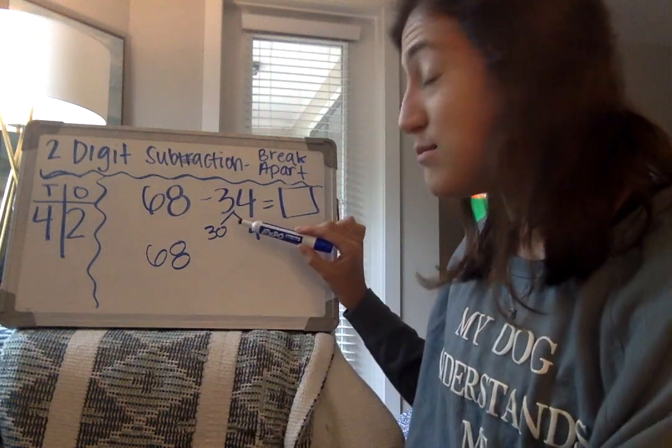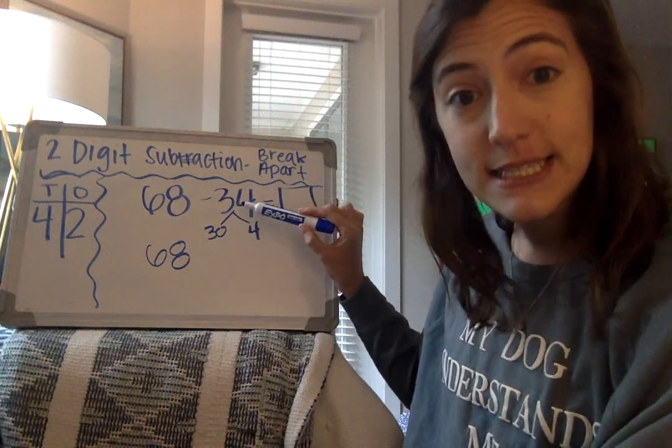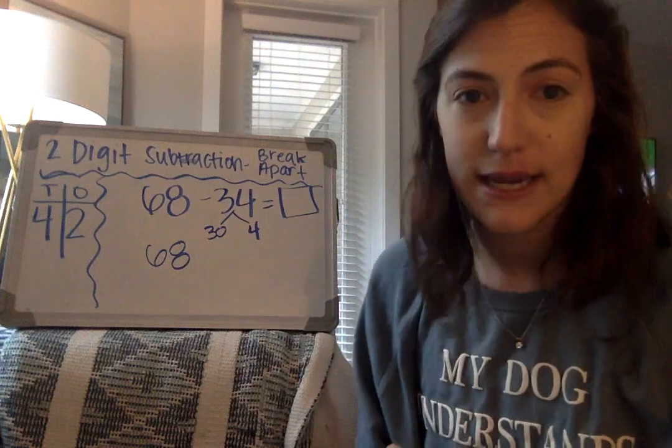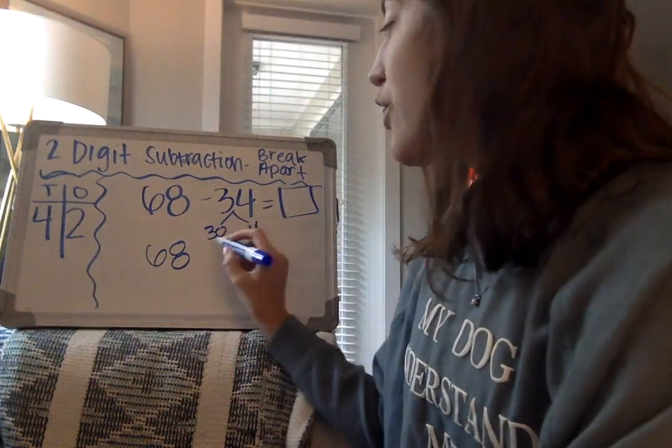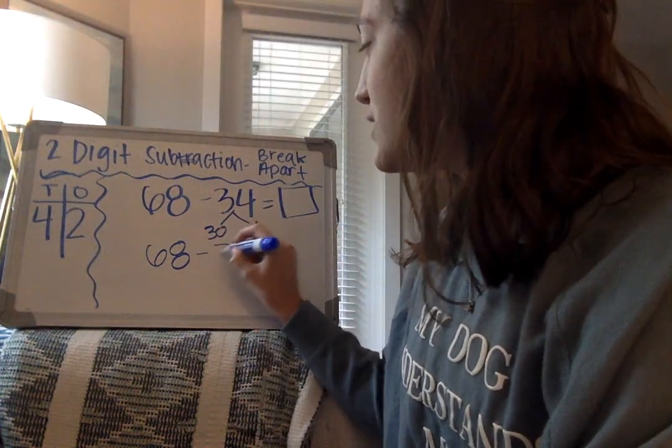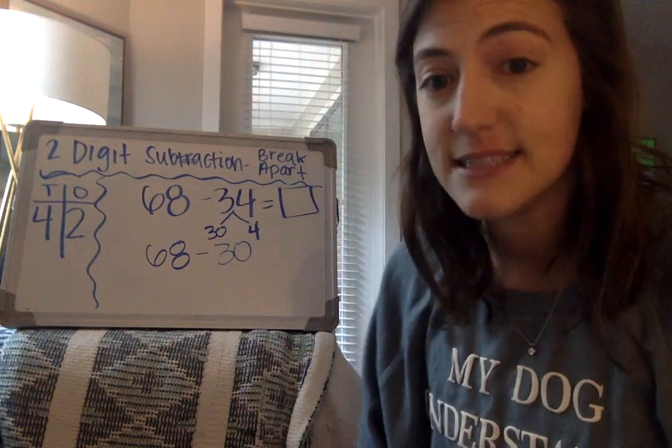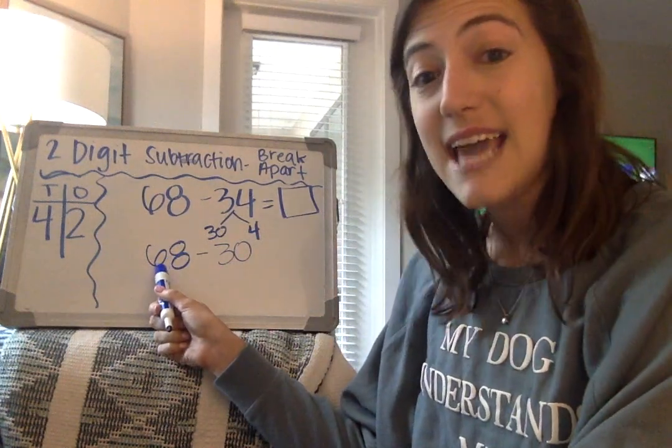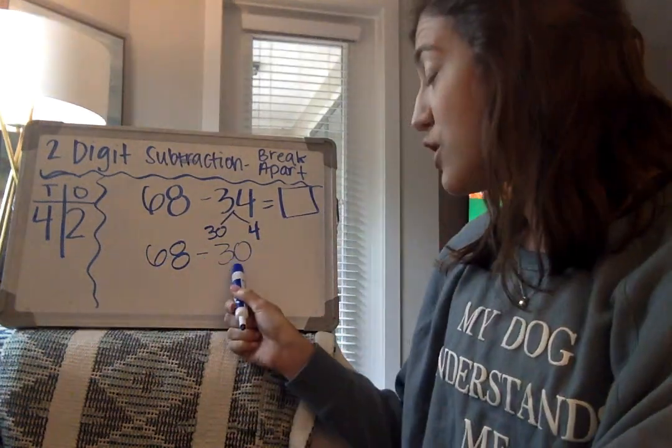Now what I can do is I can subtract the tens and then the ones from my number 68. So let's do 30 first. So first we're going to subtract the tens. So I see 68 minus 30.